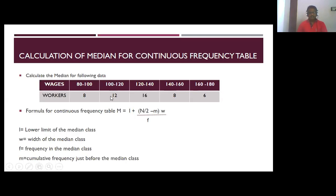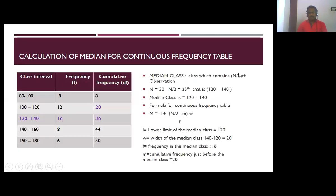First we have to find the median class. The median class is the class containing the n/2 th observation. We calculate cumulative frequency: 80–100: 8; 100–120: 12, cumulative 20; 120–140: 16, cumulative 36; 140–160: 8, cumulative 44; 160–180: 6, cumulative 50. The total n = 50, so n/2 = 25. The 25th observation falls in the class 120 to 140, so the median class is 120–140.